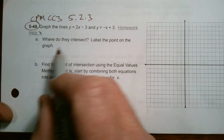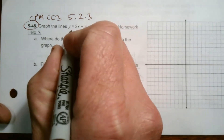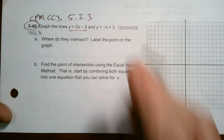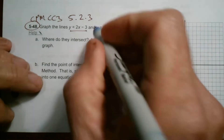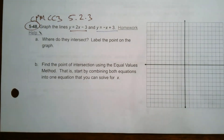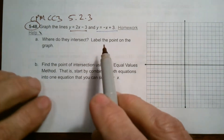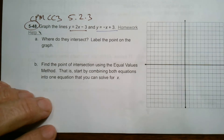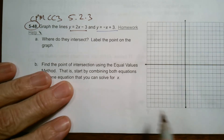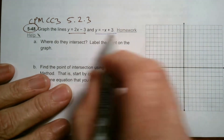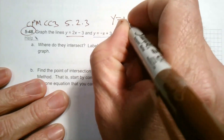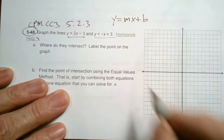It says graph the lines. So you have two lines: y equals 2x minus 3, and y equals negative x plus 3. Both are in the form y equals mx plus b.